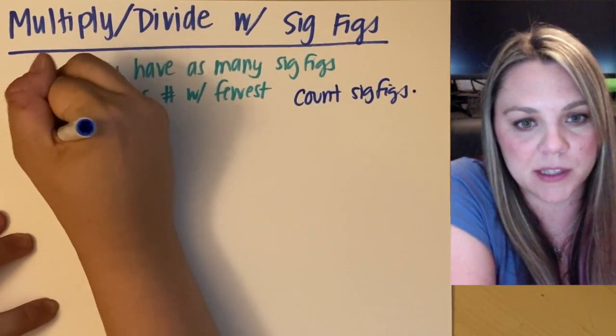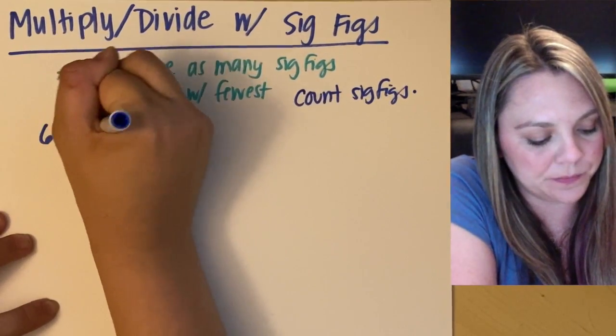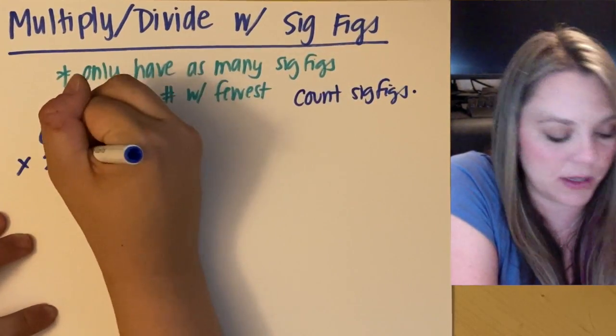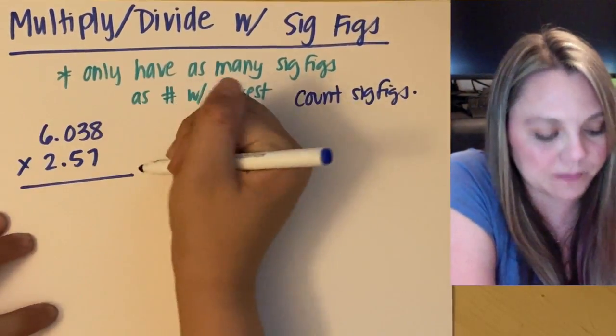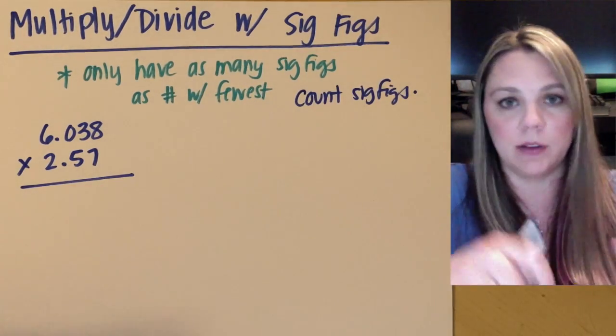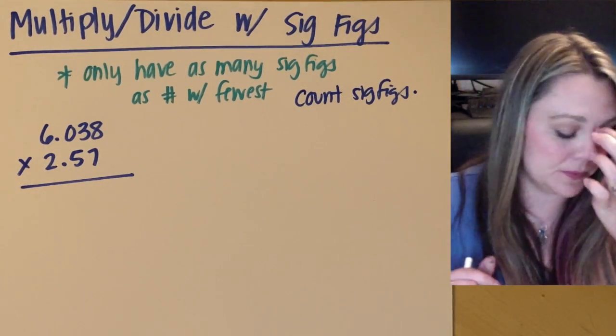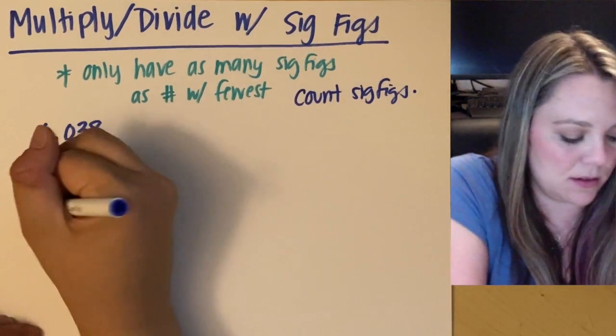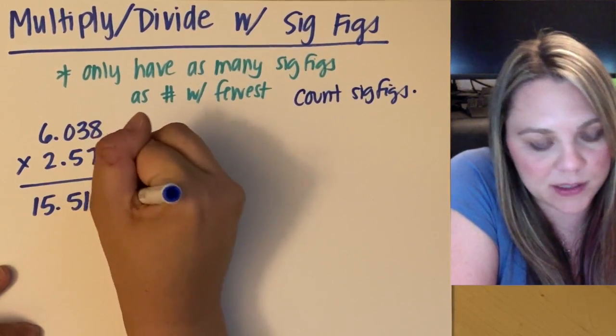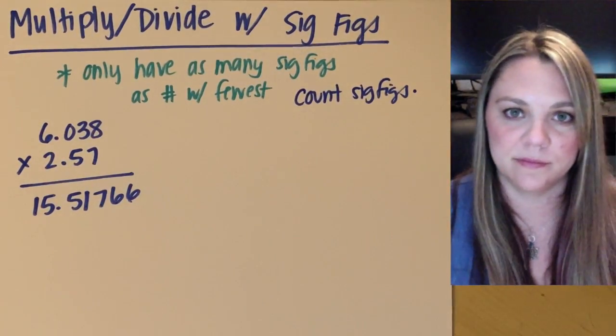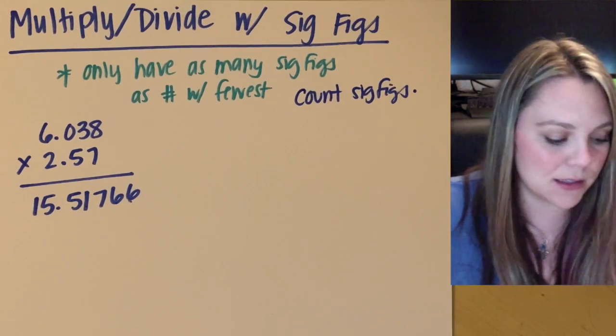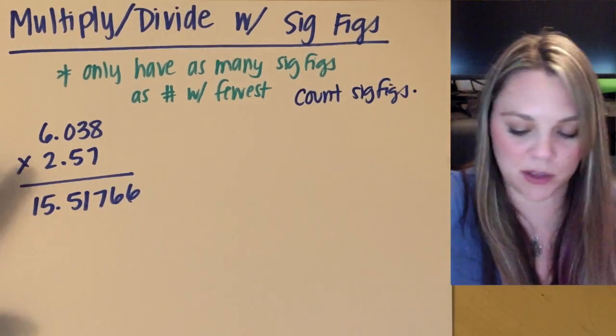Okay, so if we look at an example, 6.038 times 2.57. Okay, if I had this question and I went beep, boop, beep into my calculator, my calculator would give me 15.51766. Okay, but that's not correct, and you're smarter than your calculator because we need to actually count up our significant figures here.